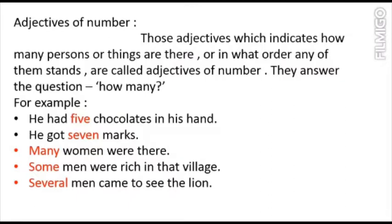Adjective of number answers the question of how many, meaning what is the number. For example, 'He had five chocolates in his hand.' Five is a number, so five is an adjective of number here. 'He got seven marks.' Seven is also a number, so seven is an adjective of number.